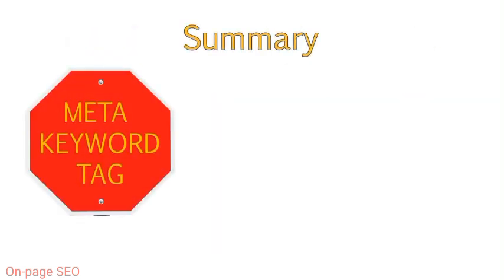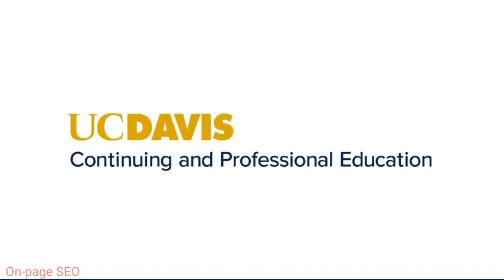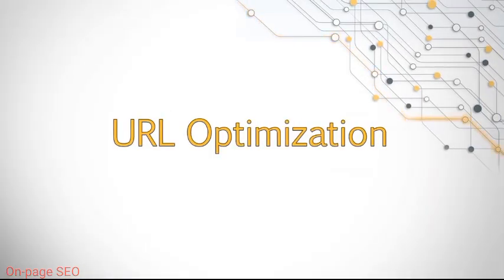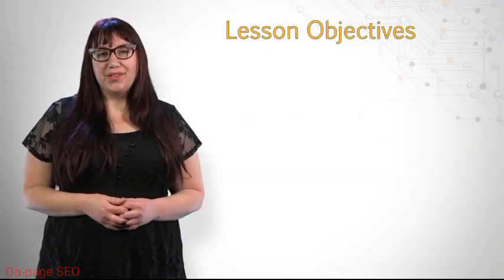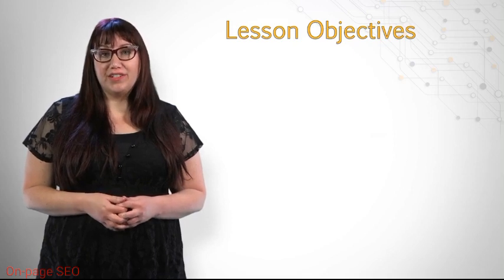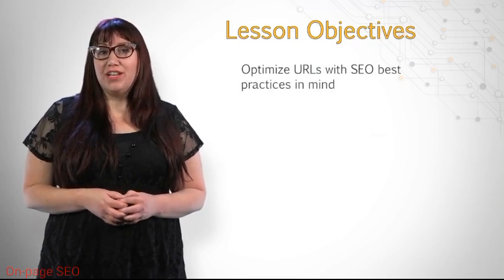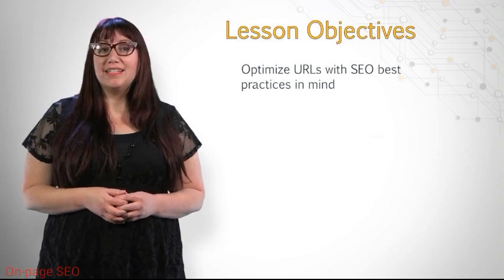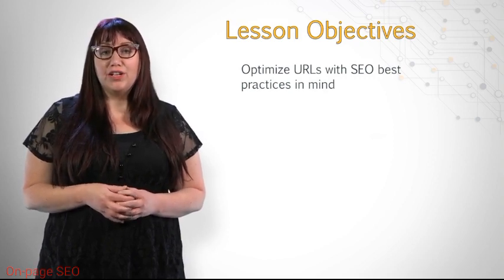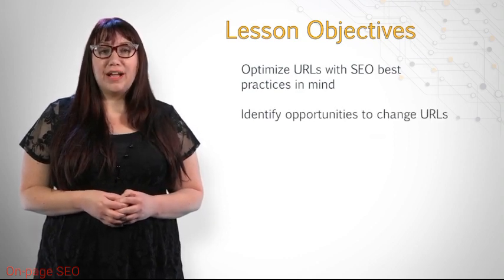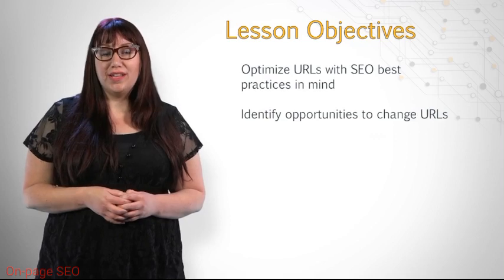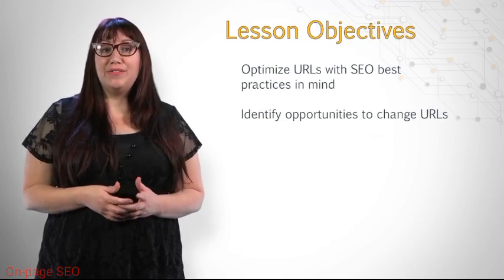You should now understand the history behind the meta keywords tag and why it is no longer used. Welcome to the lesson on URLs. While you may be familiar with these as an internet user, you'll now have the opportunity to learn how to optimize URLs according to SEO best practices, including the use of keywords, subdirectories, and parameters. We will look at when there are opportunities to change URLs, as well as when it is best to leave URLs as they are.